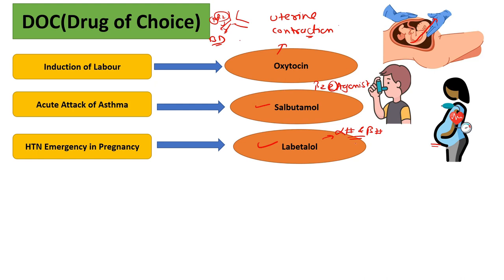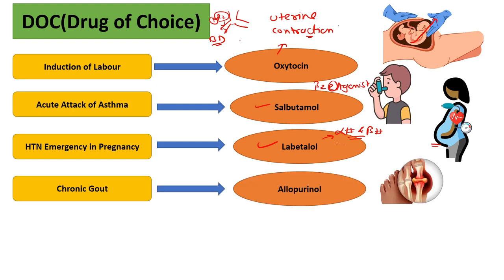Carvedilol is another third-generation beta blocker mainly used in the treatment of chronic congestive heart failure. For chronic gout, the drug of choice is allopurinol. Allopurinol is a xanthine oxidase inhibitor — it inhibits the enzyme that converts precursors into uric acid, thereby treating elevated uric acid levels.